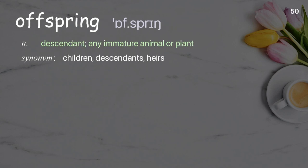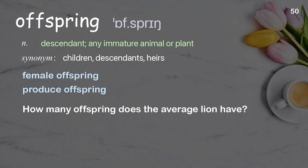Offspring: a descendant; any immature animal or plant. Examples: female offspring; produce offspring. How many offspring does the average lion have?